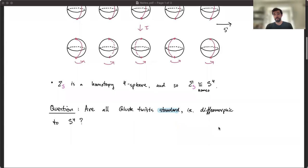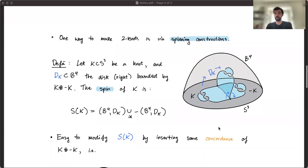So if you're interested in this sort of thing, the first thing you might do is try to cook up some interesting embeddings of 2-spheres in the 4-sphere and try to perform Gluck Twists on them. One nice way to do this is with what's called spinning constructions.